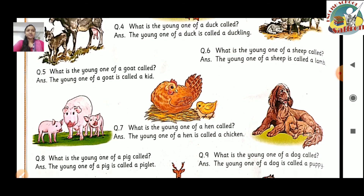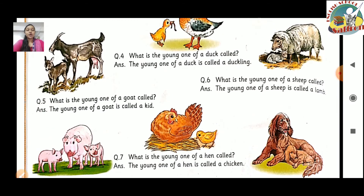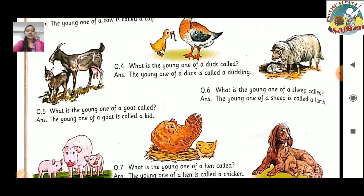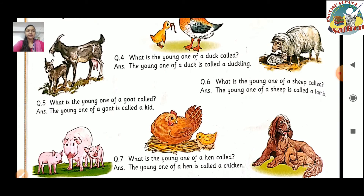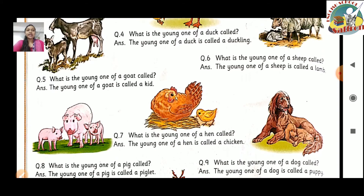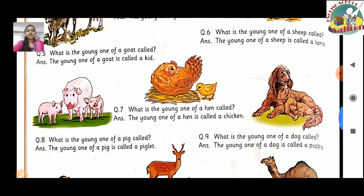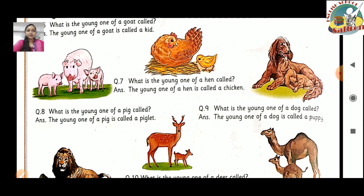Question number 5: What is the young one of a goat called? The young one of a goat is called a kid. Question number 6: What is the young one of a sheep called? Sheep ke baby ko hum lamb kehenge. Question number 7: The young one of a hen is called a chicken.